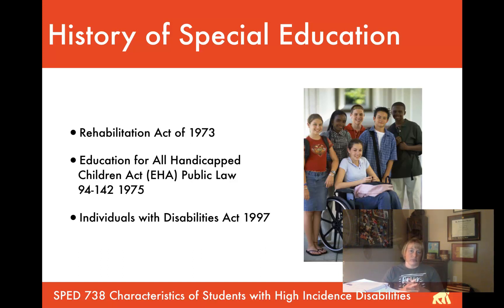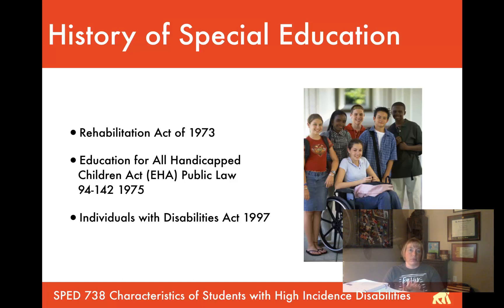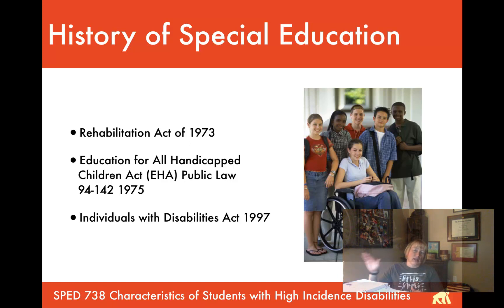The Individuals with Disabilities Act of 1997 also expanded coverage from birth to three for individuals with disabilities. Before 1997, before the age of three, there really weren't federally required services. Research shows us that early intervention is critical — whether for a language disability, learning disability, or intellectual disability, providing early intervention to infants and toddlers will have a much larger impact down the road than waiting until age three.